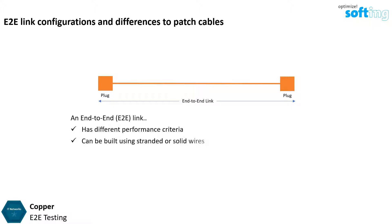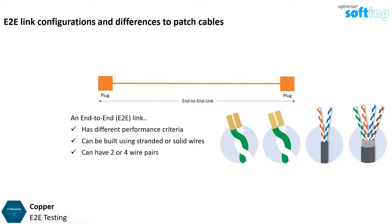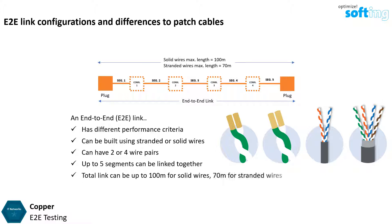An end-to-end link can be built using stranded or solid wires, while patch cables are solely made of stranded wires. An end-to-end link cable can have 2 or 4 pairs, while patch cables typically consist of 4 pairs. Up to 5 segments can be linked together using bulkhead couplers to form an end-to-end link. The total link length can be up to 100m for solid wires and up to 70m for stranded wires.